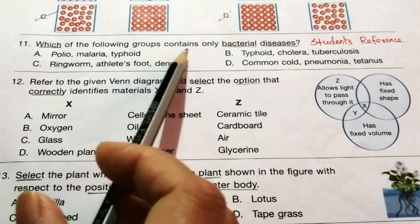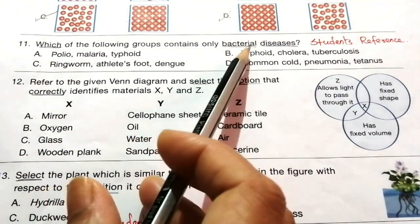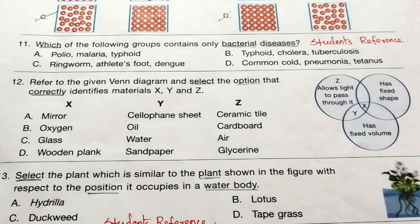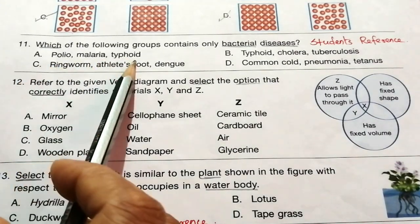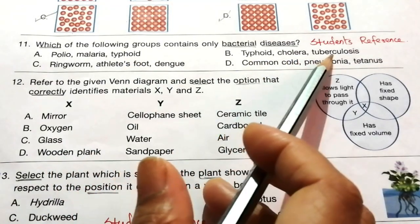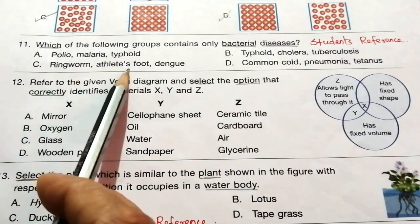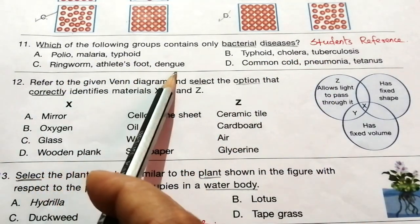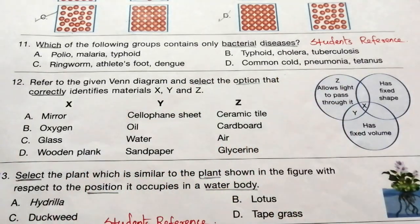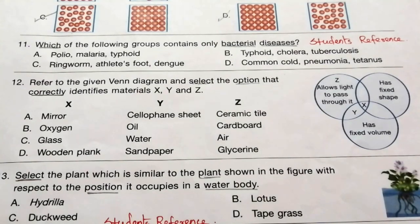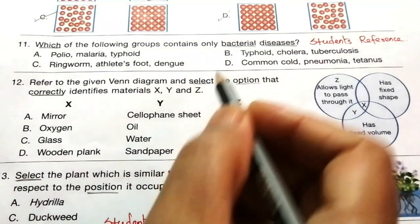Question 11: Which of the following groups contains only bacterial diseases? The correct answer is B.